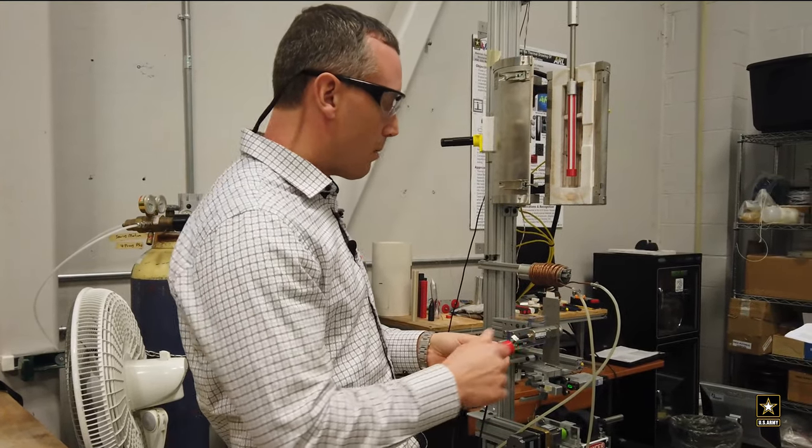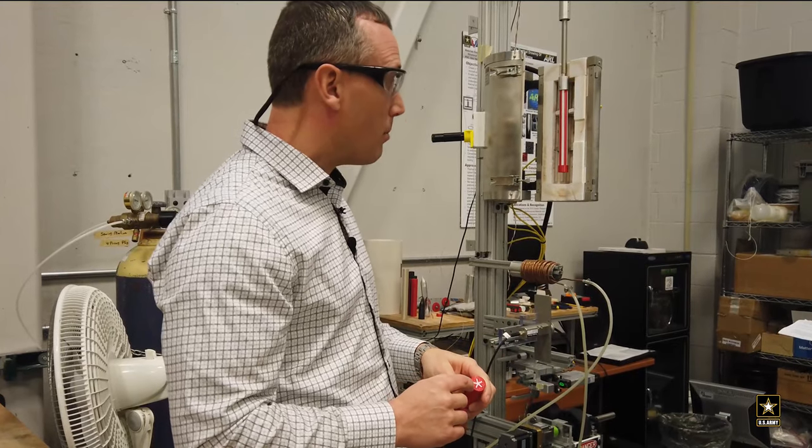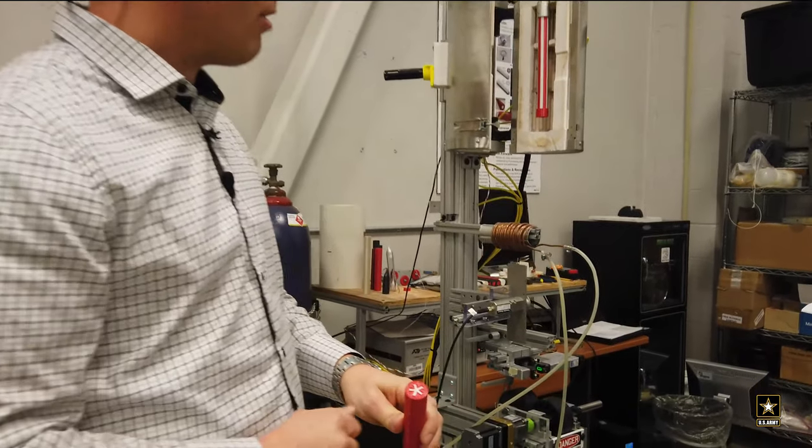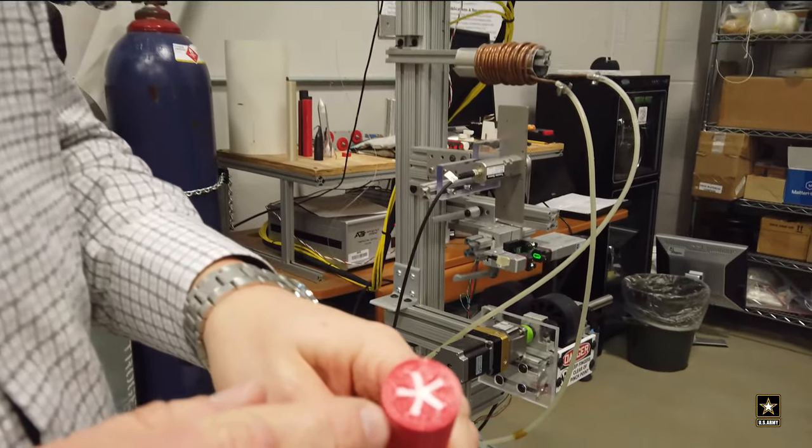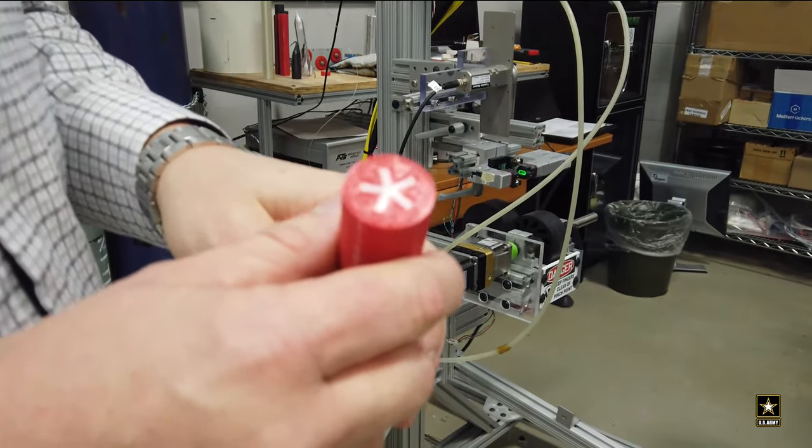If you look at this preform, you see there's a white part and a red part. The white part is a higher-temperature polymer called polycarbonate. The red part is a lower-temperature polymer called ABS.